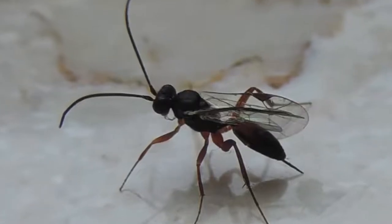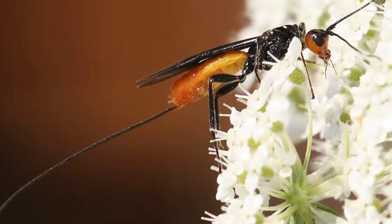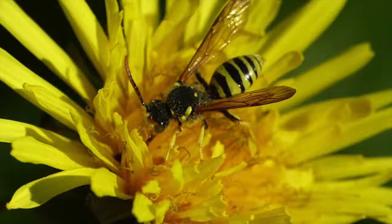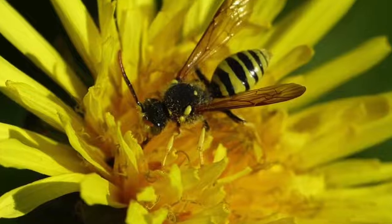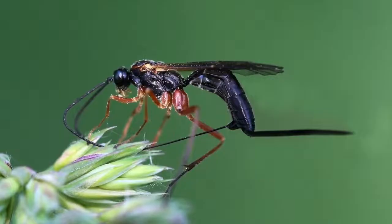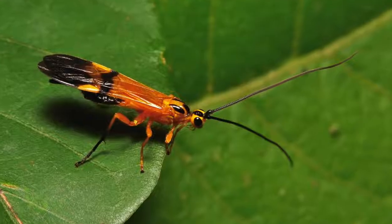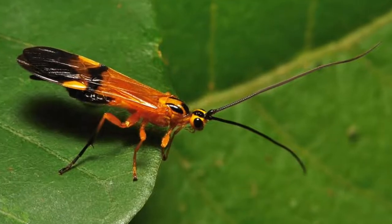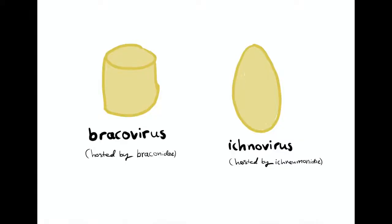Within the order Hymenoptera, there are over 40,000 species of wasps, and these species can be categorized into two families: Ichneumonidae and Braconidae. Each of these families hosts a different genus of polydnavirus. For instance, Ichneumonidae hosts Ichnoviruses, while Braconidae hosts Bracoviruses.